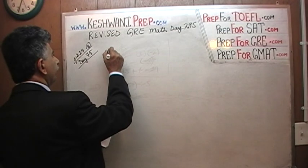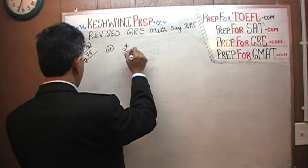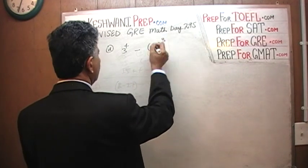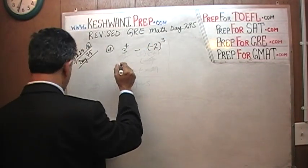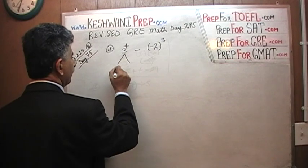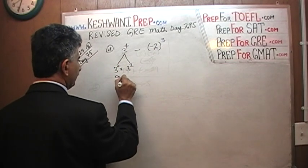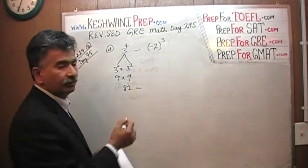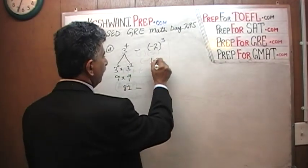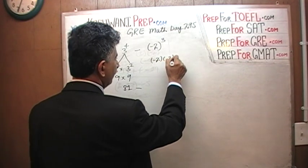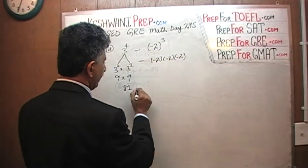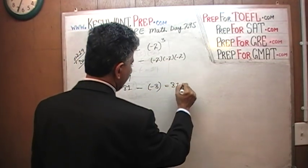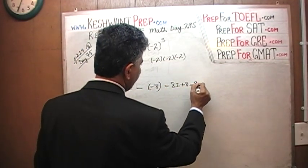Part D. 3 raised to 4 minus negative 2 raised to 3. 3 raised to 4 of course is the same as 3 squared times 3 squared which is 9 times 9 which is 81. And this one is negative 2 raised to 3 is negative 2 times negative 2 which is positive 4 times negative 2 is negative 8. So we have 81 minus negative 8. It becomes 81 plus 8 which is 89.